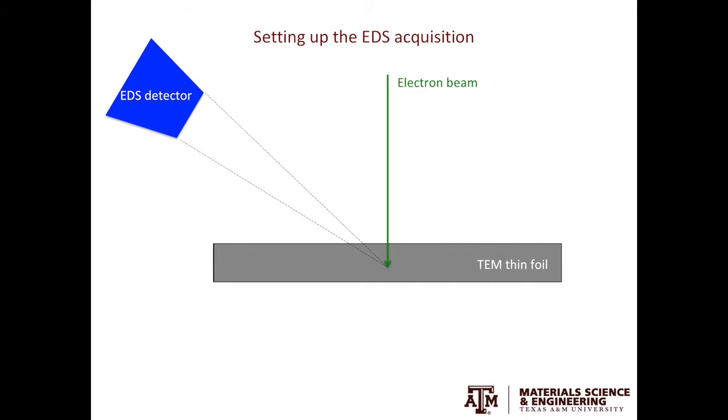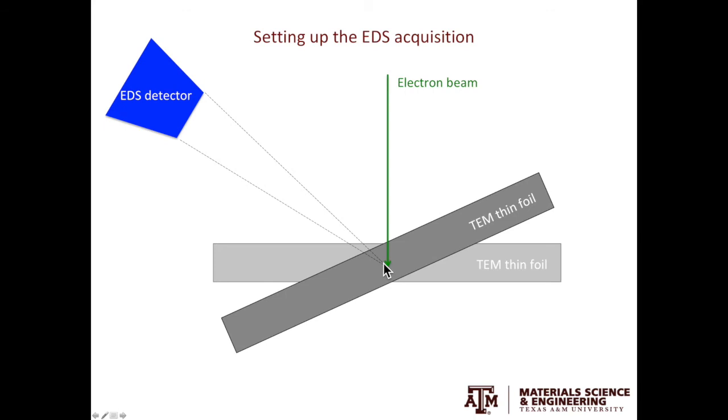Here, we'll explain why. Let's look at the specimen with 0 degree tilt. We have the incident electron beam hitting the specimen, generating X-ray, and this is the absorption distance. Now, tilt the specimen towards the detector. And this is the new absorption distance, which is shorter than the previous case.